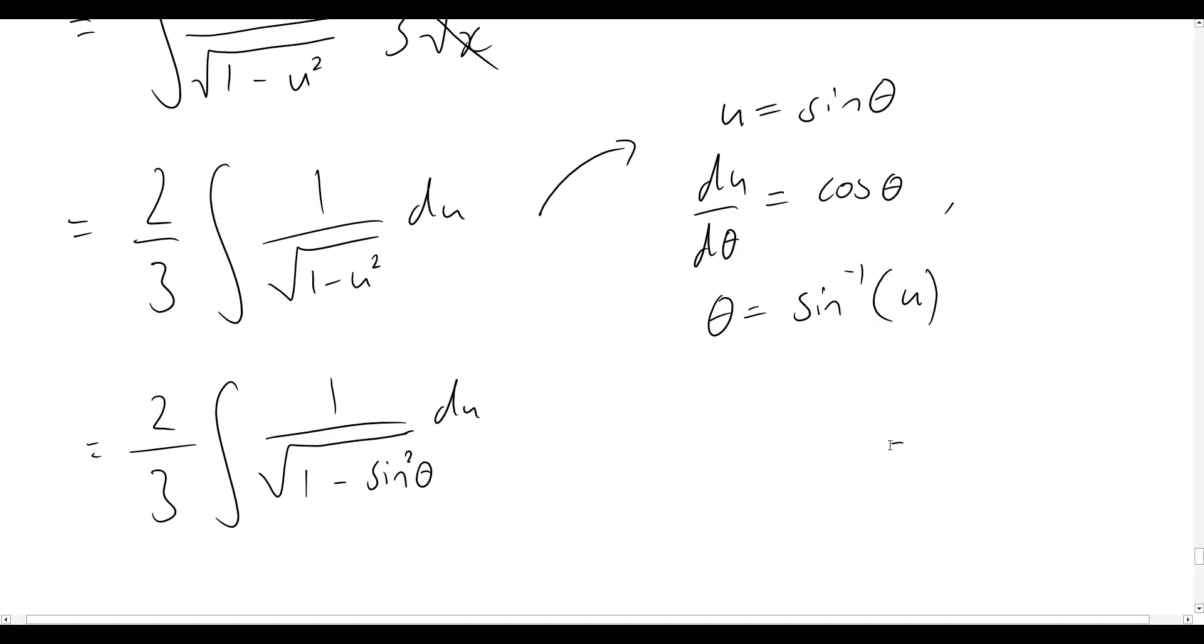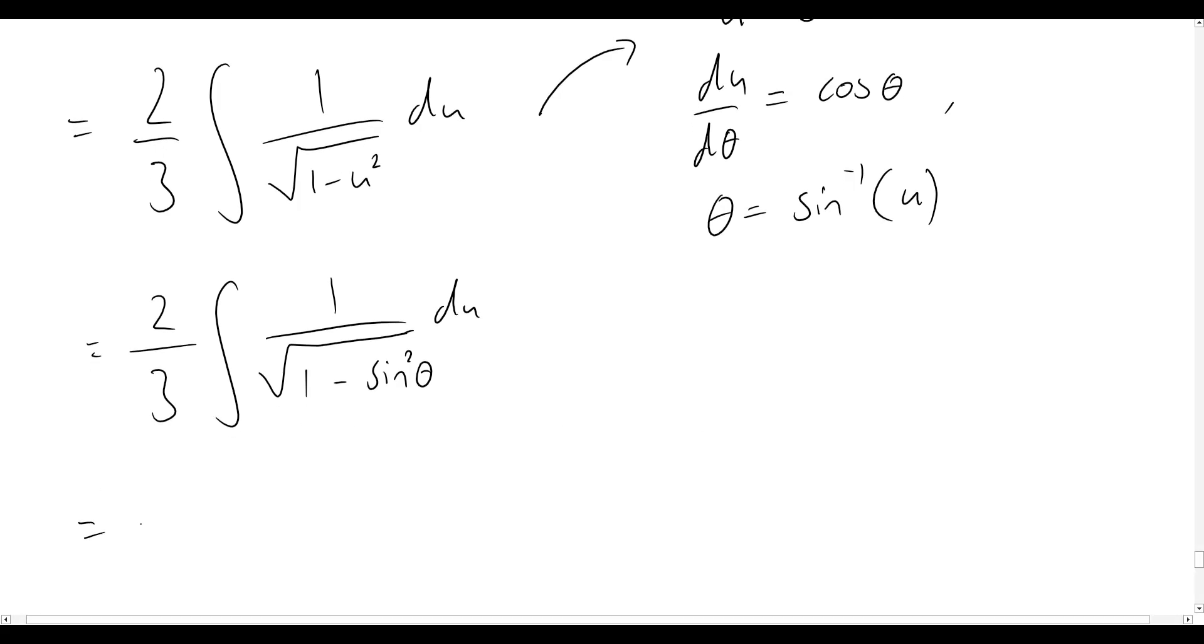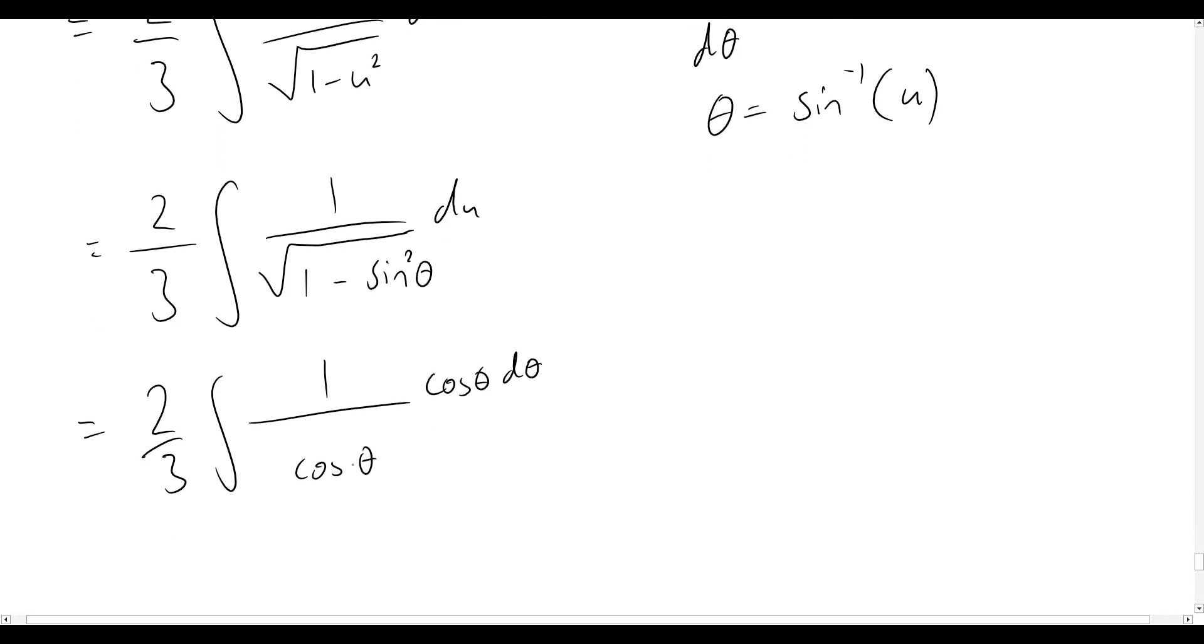Okay, so now again we'll rewrite our problem as 2/3 integral 1 over square root of cos squared theta, and du we'll now rewrite that as cos theta dθ.